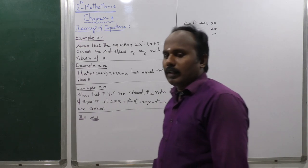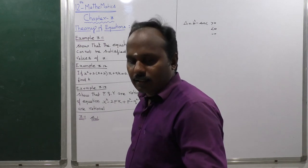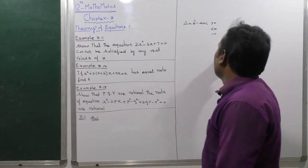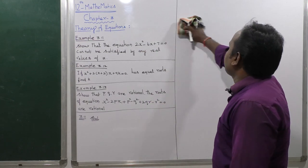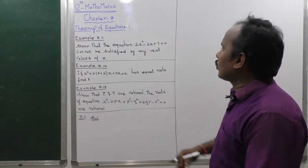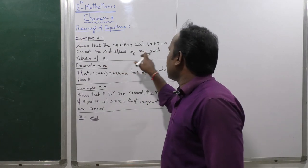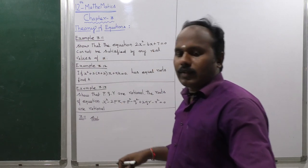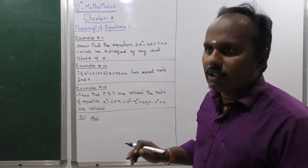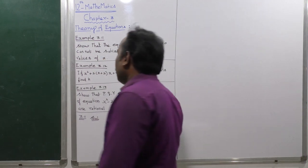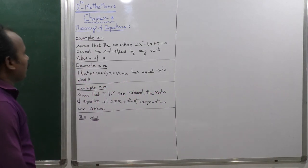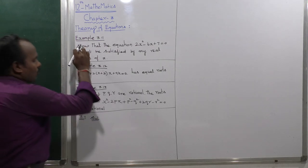If delta equals 0, the roots are equal. Since the equation is not satisfied by any real value, that means it yields imaginary roots — an imaginary root is the only answer in this case.